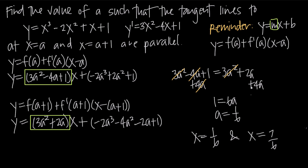So the tangent lines to this function at x equals 1 sixth and x equals 7 sixths are parallel, and that's how we apply what we know about finding the equation of the tangent line to a problem like this one.